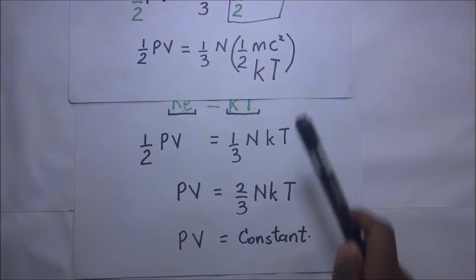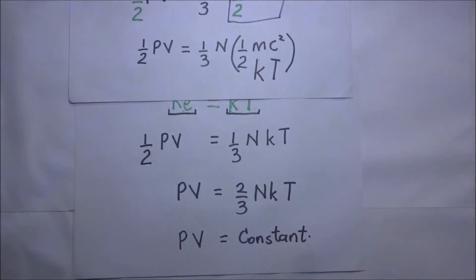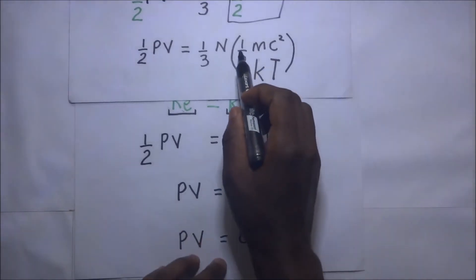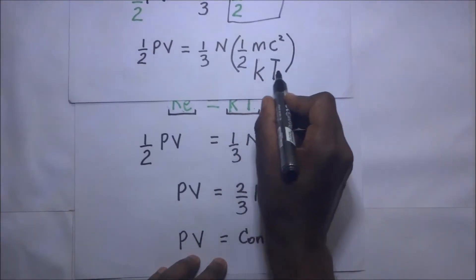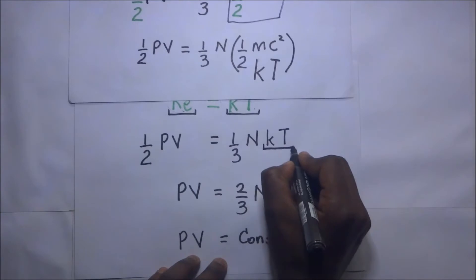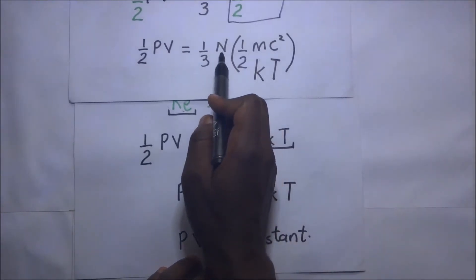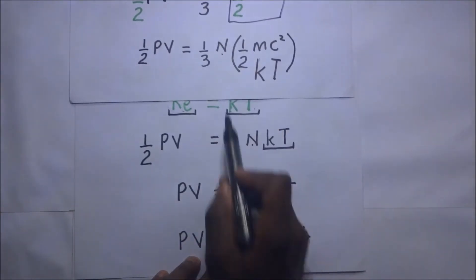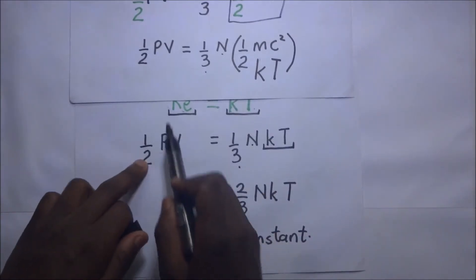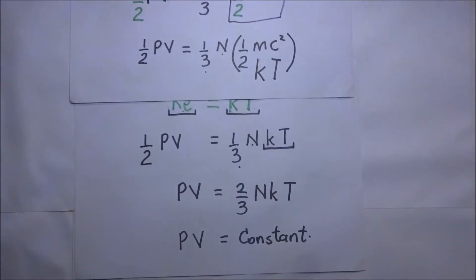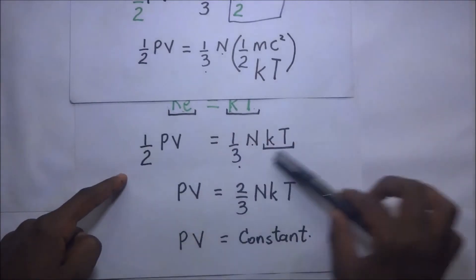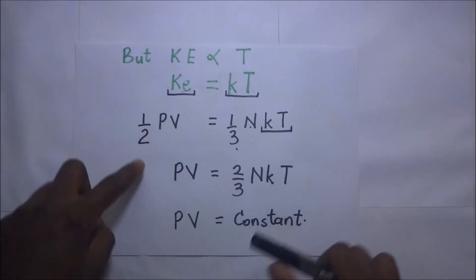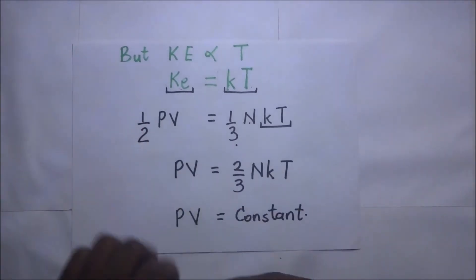And in our next step, this is what we did. Where there was one-half MC squared, we replaced it with KT, which is right there. Of course, the N remains the way it is, then the one-third remains, then one-half PV. So that explains this next step right there. And so we continue. We multiply two on both sides